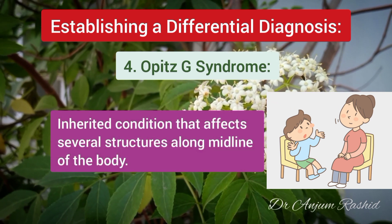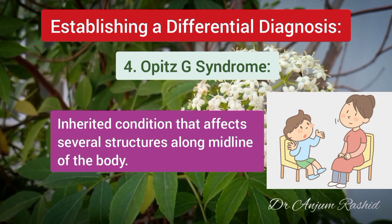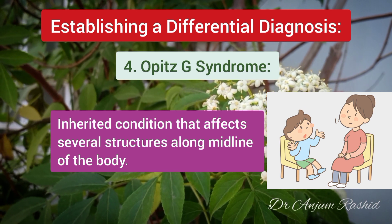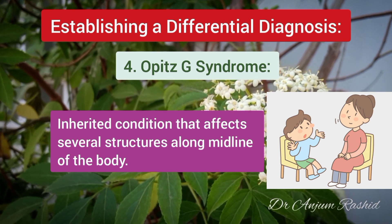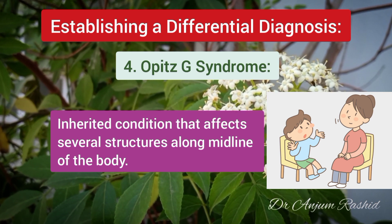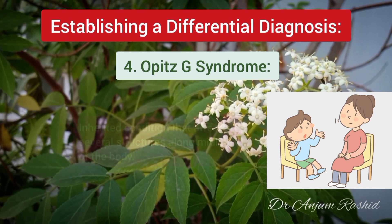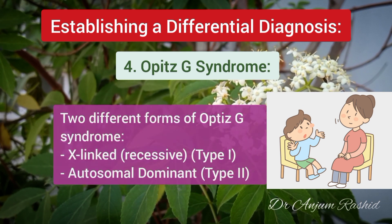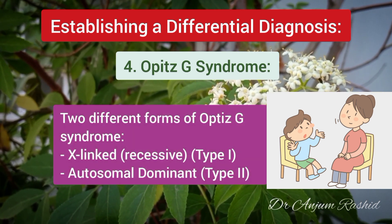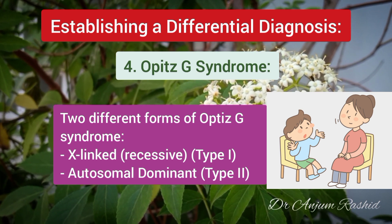Opitz-G syndrome is an inherited condition that affects several structures along the midline of the body. The most common features are widely spaced eyes and defects of the larynx, trachea, or esophagus, which cause breathing problems and difficulty swallowing.